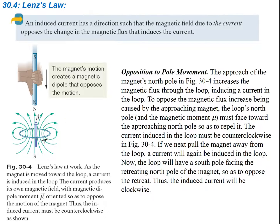In the picture here, the magnet's motion is going to create a magnetic dipole that opposes the motion. So for instance, if you have a magnet with the north pole facing the direction of the loop and you're moving it downwards, the current is going to be induced such that the magnetic field produced by this current would oppose the motion. It's going to have its north pole facing towards the incoming magnet such that the two north poles would repel.